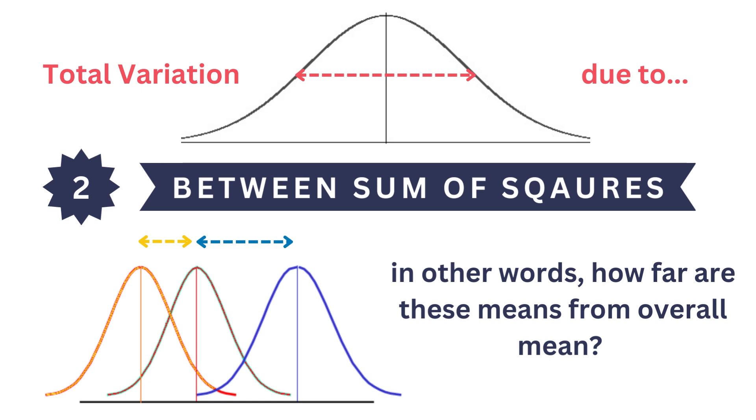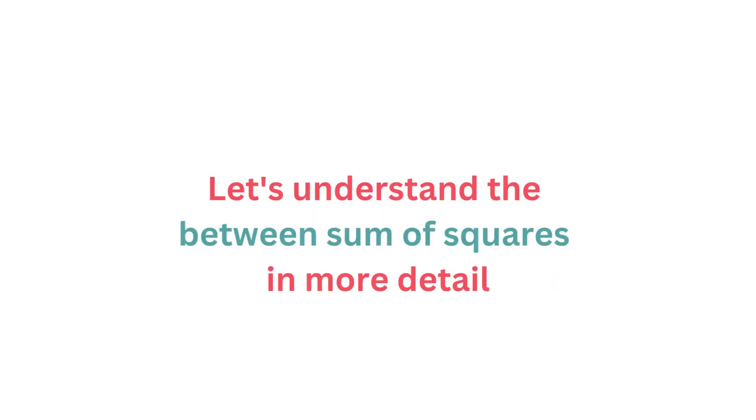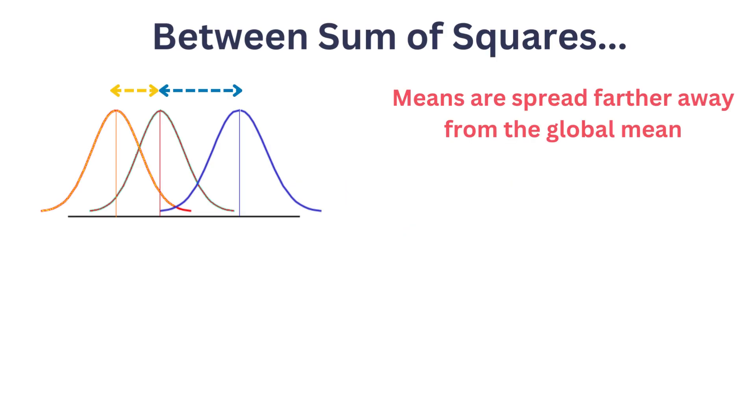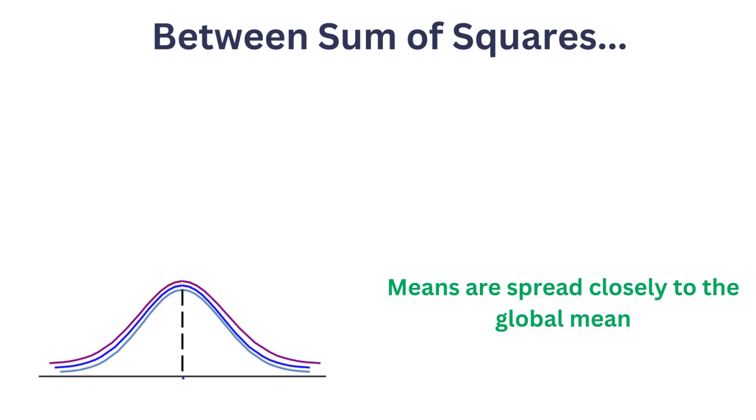In other words, how far are these means from the overall mean? Let's understand between sum of squares in more detail. If means are spread farther away from the global mean, between sum of squares is high. While if means are spread closely to the global mean, between sum of squares is lower.